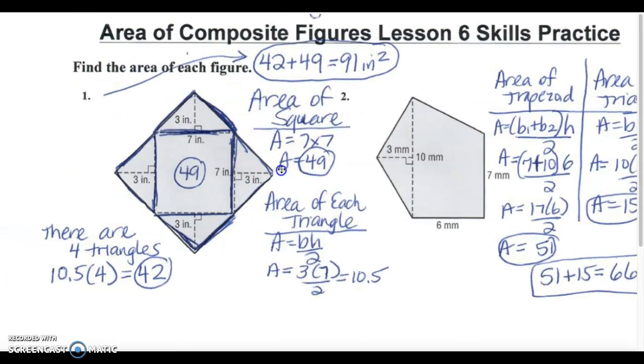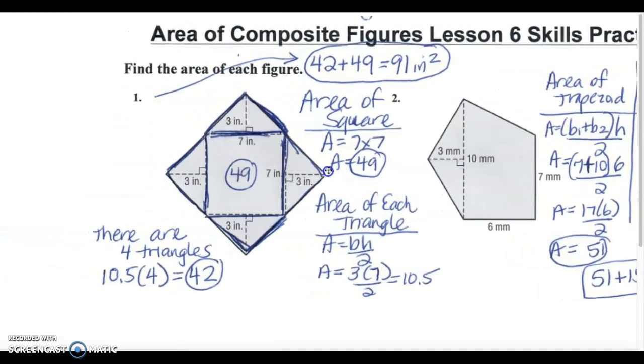I'm going to go over the first problem with you as carefully as I can. In this first problem the middle part of this is a square. To find the area of the square I multiplied 7 times 7 and I got 49 as the area of the square.